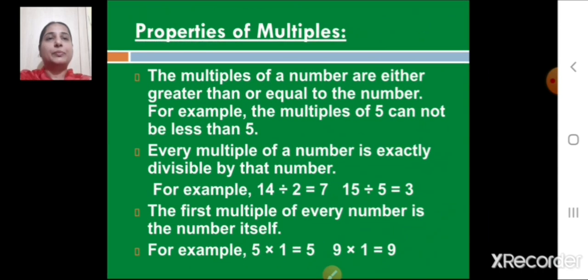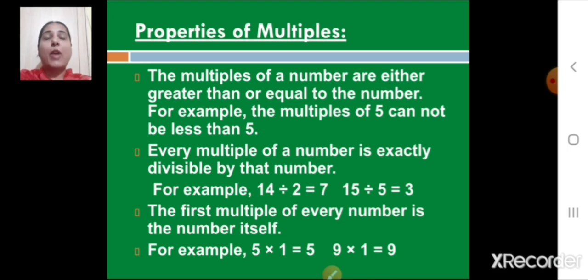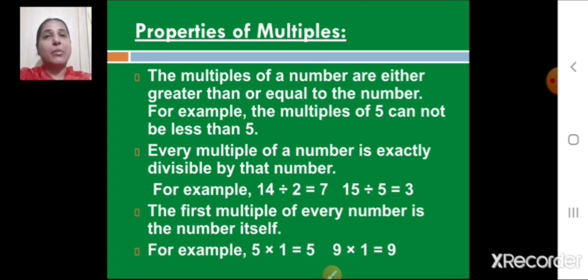The fourth property is: the multiples of a number are either greater than or equal to the number. For example, the multiples of 5 cannot be less than 5. When you multiply 5 by 1 you get 5, and multiplying by any other counting number gives more than 5. So multiples are always greater than or equal to the number.